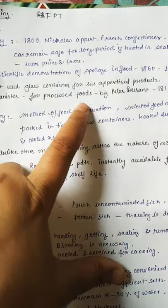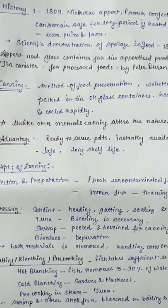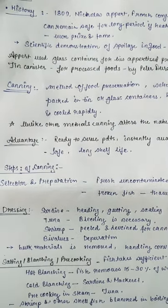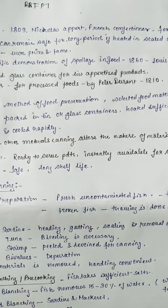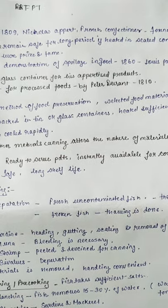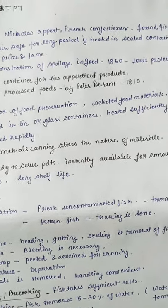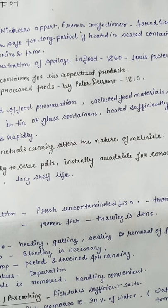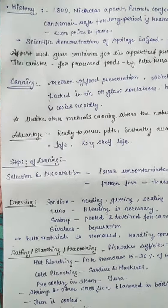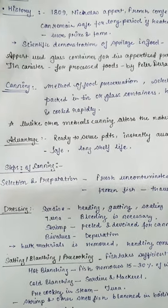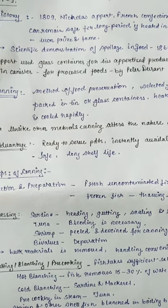Scientific demonstration of spoilage in food was given by Louis Pasteur in 1860. Appert used glass containers for his appetized products. Tin canisters were also used for processed food by Peter Durand, a scientist, in 1810.